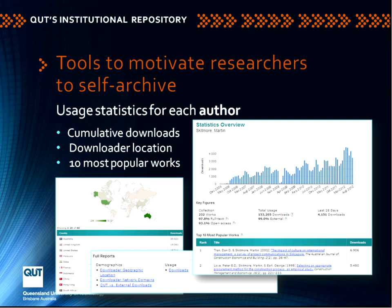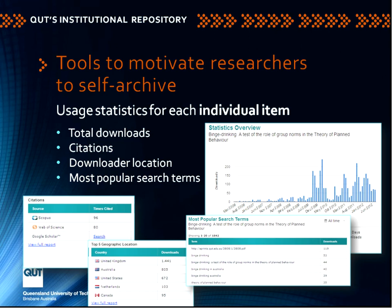We're able to provide usage statistics for each author showing downloads, and also giving interesting information about where the readership for a particular article might be around the world. Researchers find it very interesting to compare their download statistics with citation metrics from tools such as Scopus and Web of Science. Researchers get very absorbed by the idea that they might have quite good citation metrics not matched by large download statistics, or vice versa.